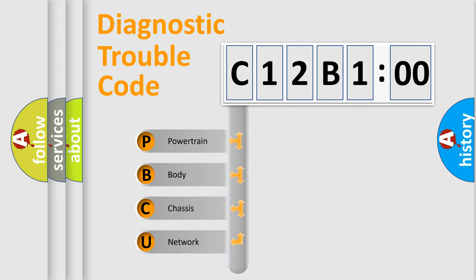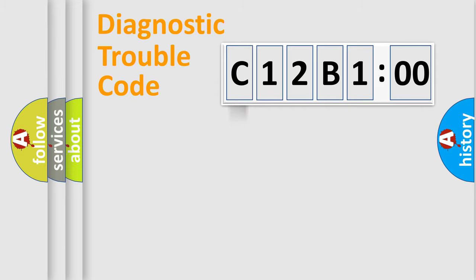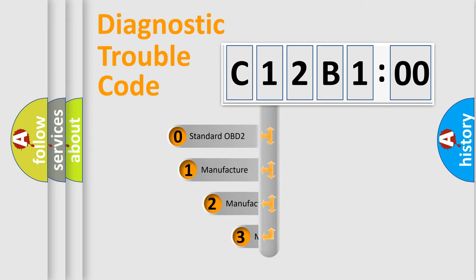We divide the electric system of automobile into four basic units: Powertrain, body, chassis, and network. This distribution is defined in the first character code.